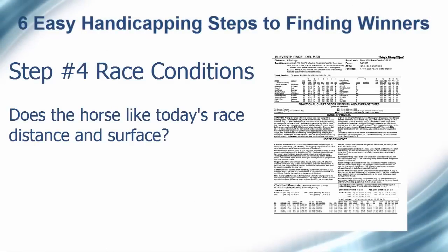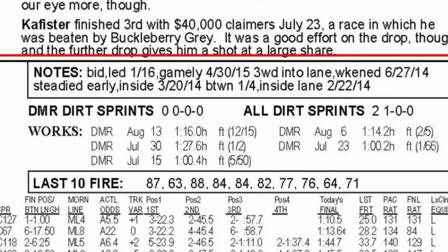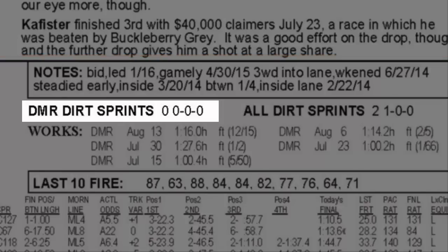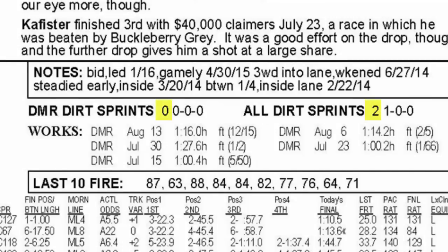The fourth step in handicapping to find winners is understanding if the horse likes today's surface and distance. Even horses that are in form and have the ability and the class to win are generally beaten when entered into unsuitable races. The race sheets make it easy to see if a horse has performed well in today's race conditions. If we look in the horse's data box, you will see how the horse has performed on today's track at this race surface and this race distance. You will also see how the horse has performed on today's surface and distance. The records are listed as the number of starts, wins, places, and shows.